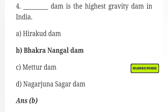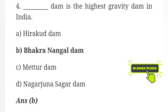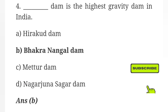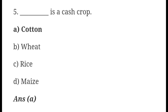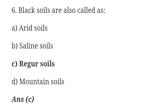Question 4: The Bhakra Dam is the highest gravity dam in India. Question 5: Das is a cash crop — Answer: Option A, Cotton. Question 6: Black soils are also called as — Answer: Option C, Regu soils.